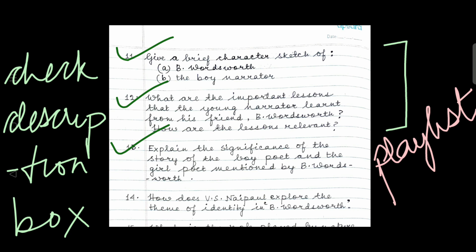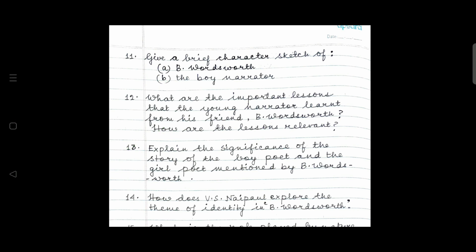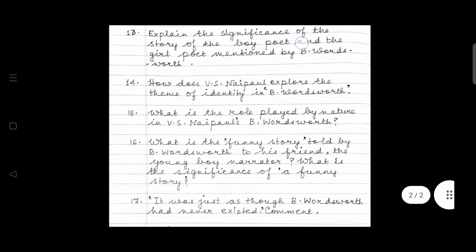She had become so harsh. And since the boy was young, the mother had to be strict. But that does not justify the way she hit the boy, the way she was harsh to the boy. Analyze this and take help from the reference material. The relationship with the boy narrator and the role played by the narrator's mother. Question eleven. Give a brief character sketch of number A, B. Wordsworth. Already uploaded. Check the description box. Number B, the boy narrator. Again, uploaded. Check the description box.